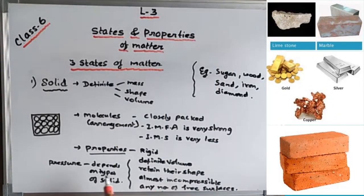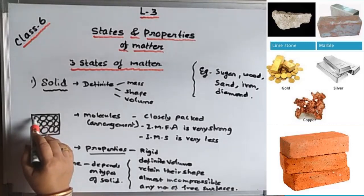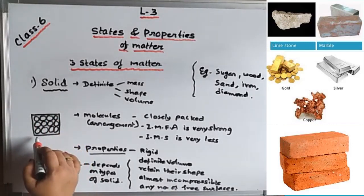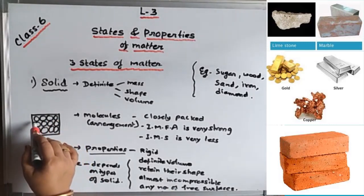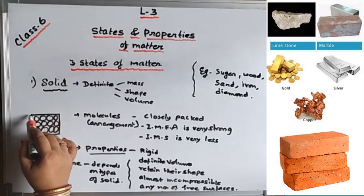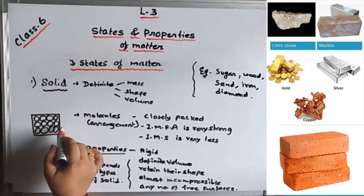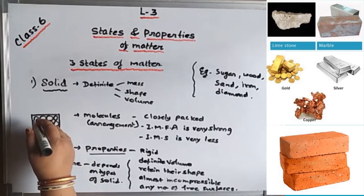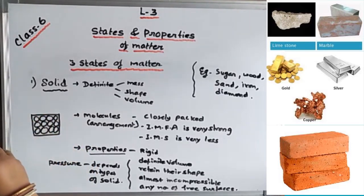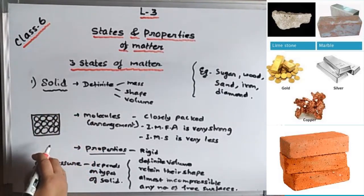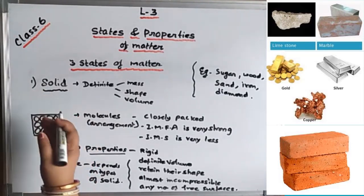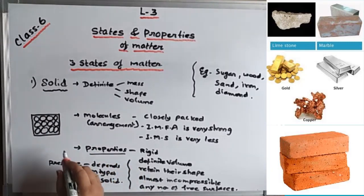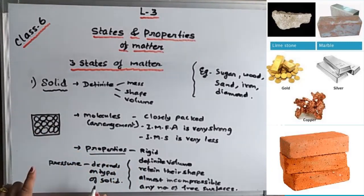About free surface: all the molecules are attached to the surface — the side molecules are attached. So any number of free surfaces are present in a solid. You can take molecules from any side — four sides are open for it. Any number of free surfaces are present in a solid.